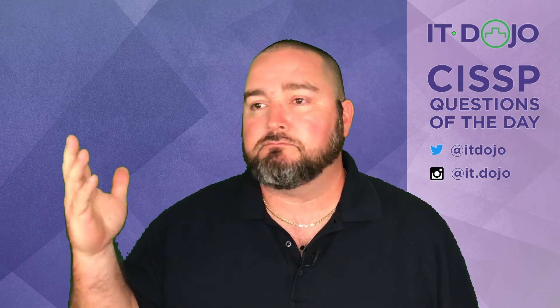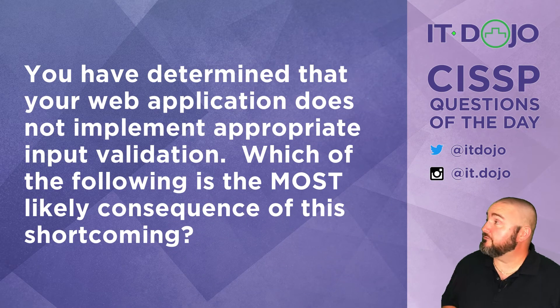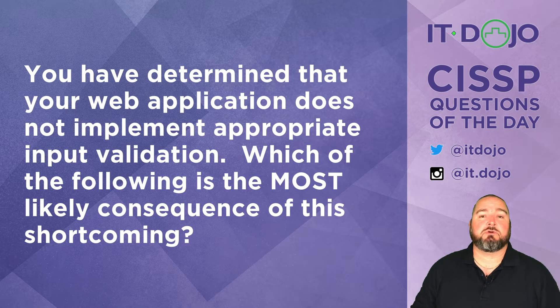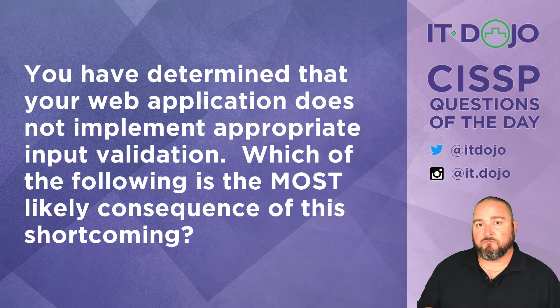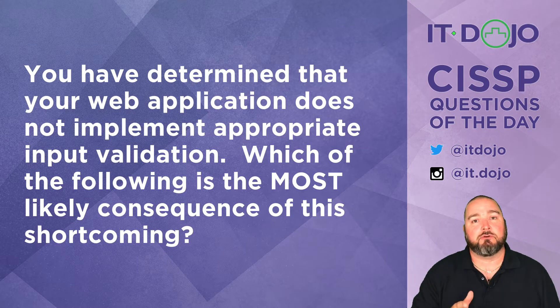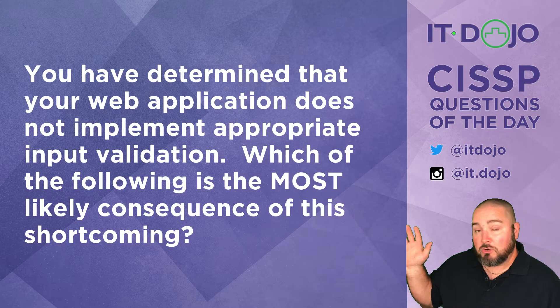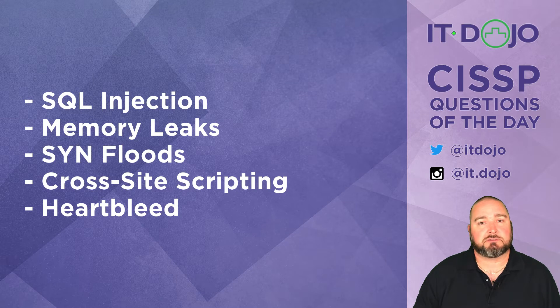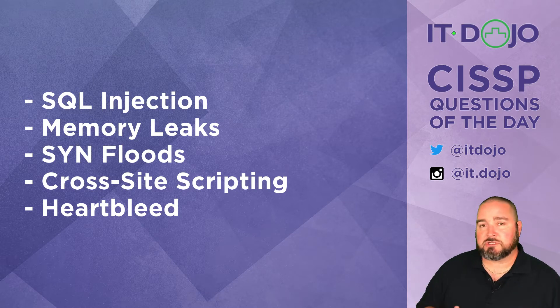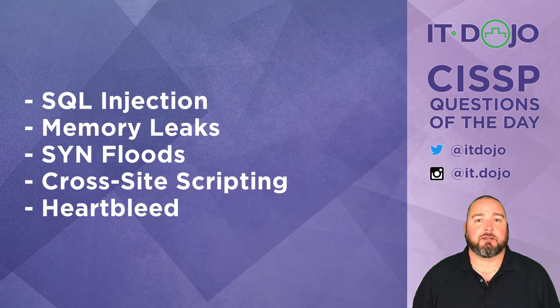Hey, welcome once again CISSP wannabes. Colin Weaver here with the ITDojo CISSP questions of the day, where pretty much every single day I come at you with two questions to help you prepare for your CISSP exam. Question one: you have determined that your web application is not doing appropriate input validation. Which of these answer choices is the most likely consequence? Click pause, give it some thought, and when you're ready click play and we can break it all down.